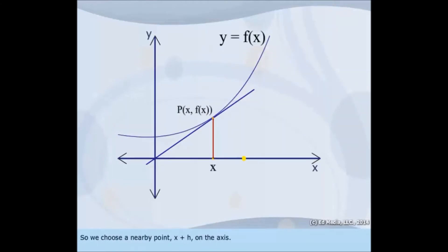So, we choose a nearby point, x plus h, on the axis. This gives us a second point Q on the curve with coordinates (x + h, f(x + h)).